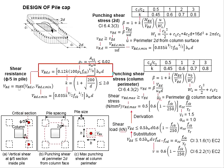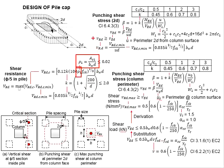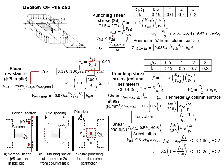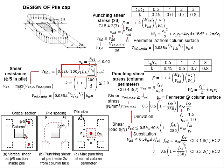Next, you need to determine the resistance of the concrete. The K here refers to this formula, while Rho 1 here represents the amount of reinforcement bar. Sl is the reinforcement bar provided in the pile cap crossing the critical section. bd refers to the width of the pile caps and the depth of the reinforcement bar. The rebar area Rho 1 needs to be less than 0.02. Substitute the values into the formula to obtain VRd,c.